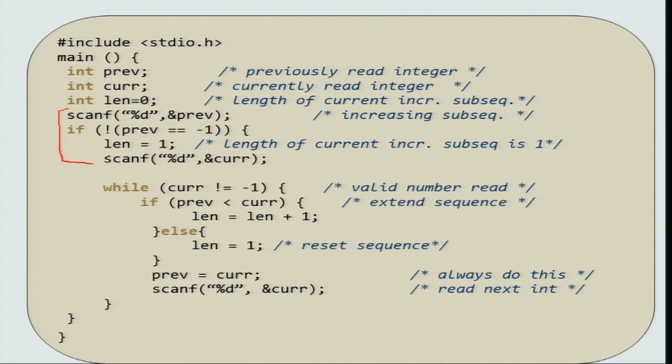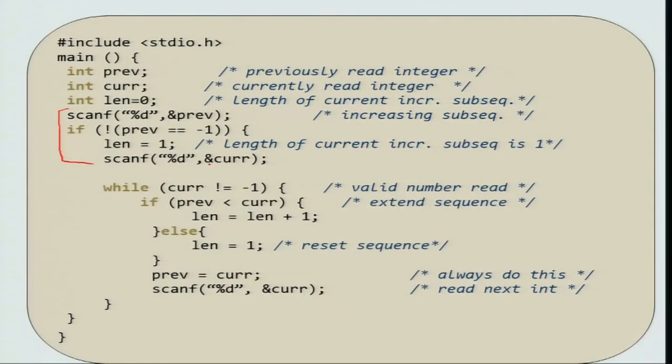If the first number is minus 1, then there is no point in getting into the program because it is equivalent to the empty input — there is no increasing subsequence to be found, so you just exit out. Initially, we just check to see whether the first number is minus 1 or not. If it is not minus 1, you scan the next number, so current will be the second number.